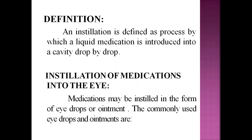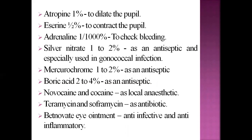The commonly used eye drops and ointments are: atropine 1%, which is used to dilate the pupil; eserine 0.5%, which is used to contract the pupil. Adrenaline 1/1000% is used to check for bleeding — whether any internal bleeding is present inside the eye. Silver nitrate 1–2% is used as an antiseptic and is especially used in gonococcal infection.